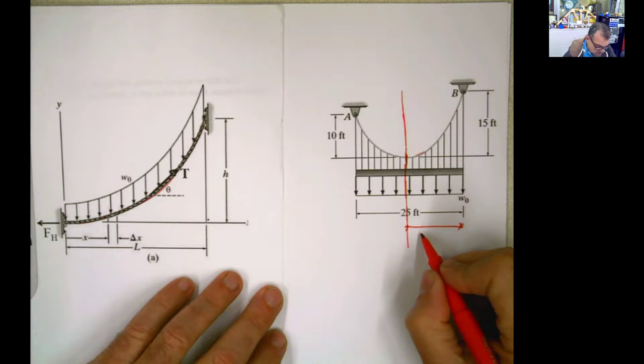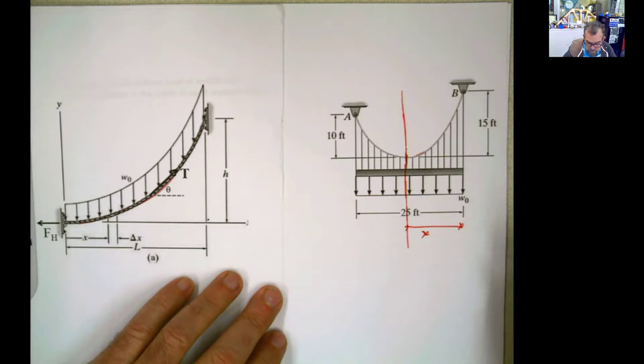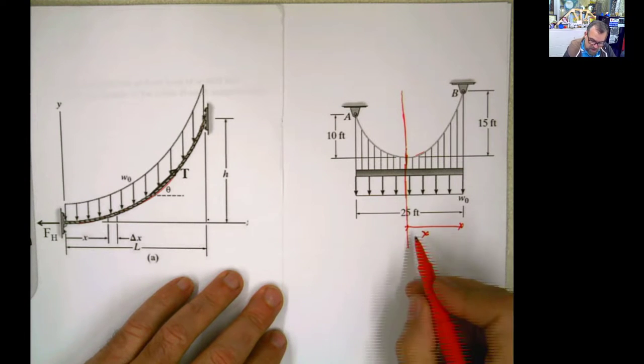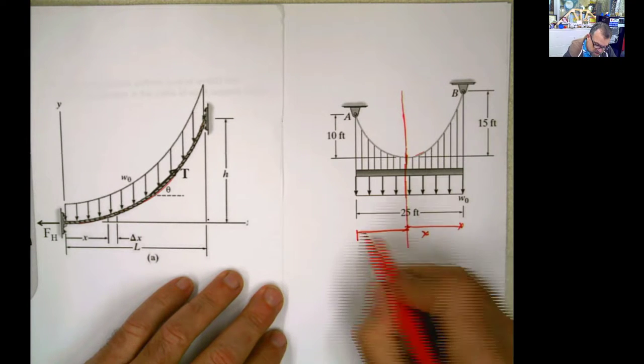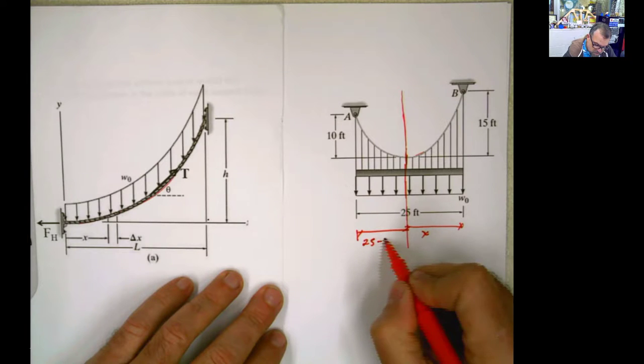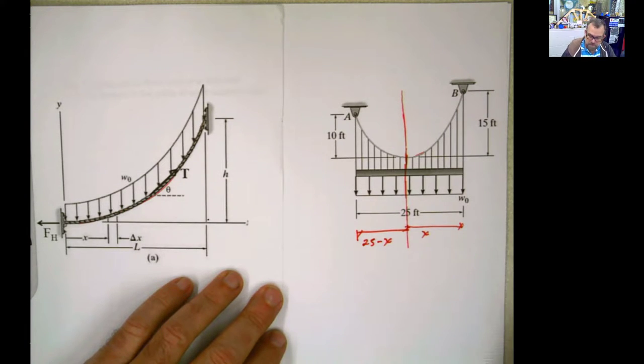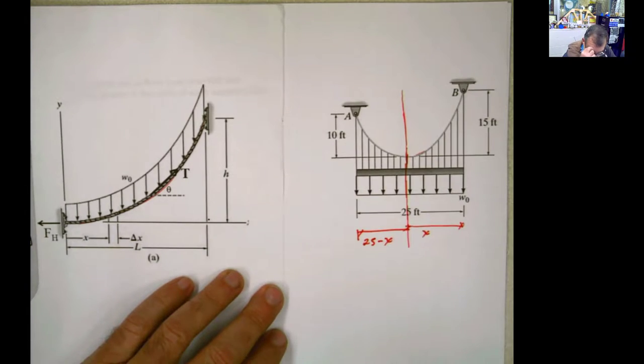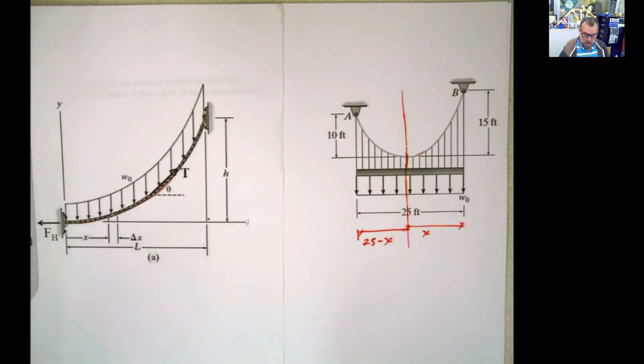I'm going to call this distance, instead of l, I'm going to call that distance x. You can call it a small l if you want to, but let's say x. And if this distance is x, this distance is 25 minus x. Got that? I can hear you. OK, so look what happens here.